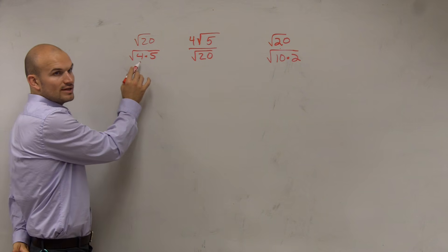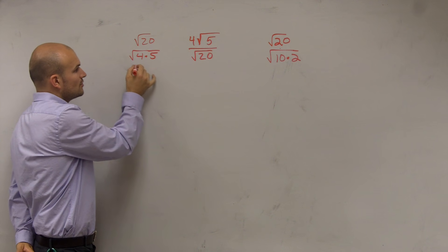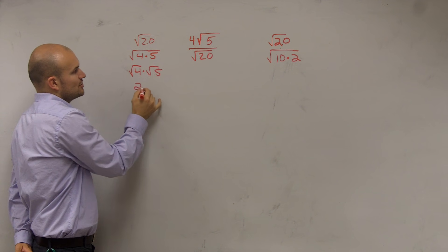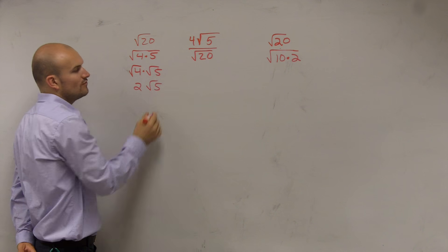We know what the square root of 4 is. The square root of 4 is 2. So I get 2, radical 5.